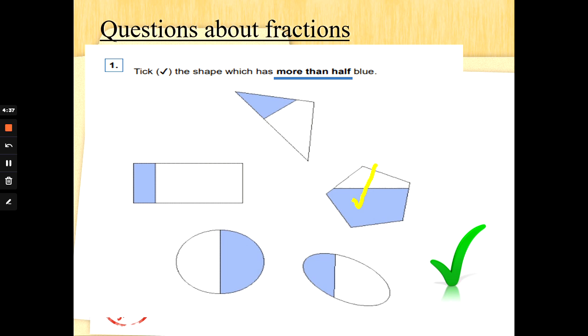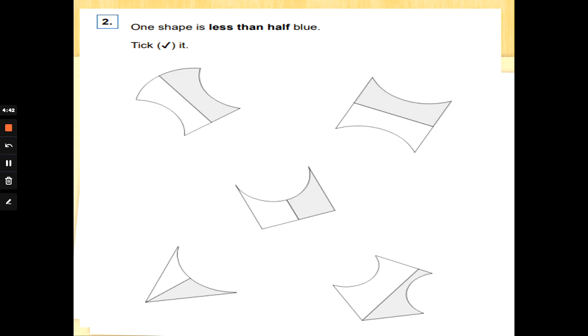Number 2. One shape is less than half blue. Tick it. This is the opposite to more than. There's one shape that's got less than half that has not been cut quite into half. Think you've spotted it? There it is. Well done. Fantastic work so far.